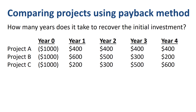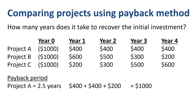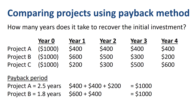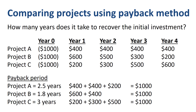Applying the payback method can help. We already calculated the payback period for project A at 2.5 years. Project B has a payback period of 1.8 years — $600 in year 1 and $400 out of the year 2 benefits. Project C has a payback of 3 years — $200 in year 1, $300 in year 2, $500 in year 3. The payback method does a good job here; it recognizes that time is money. Earlier benefits are more valuable than later benefits, so project B is the most attractive.